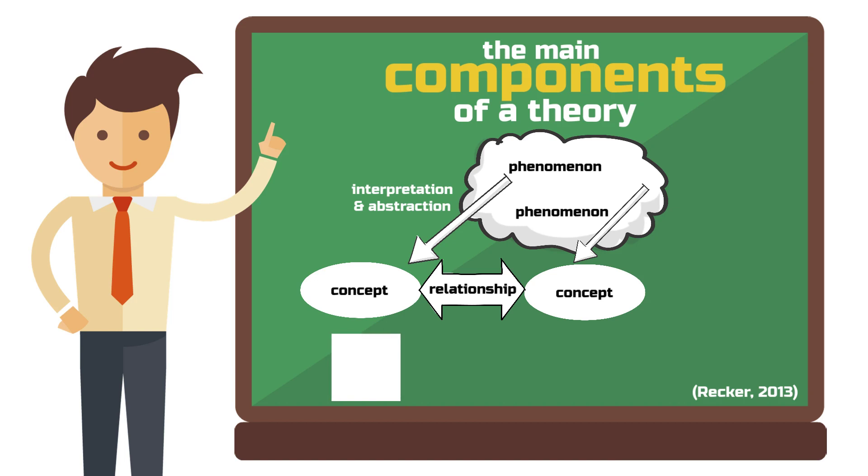To do this, concepts are transformed into constructs that consist of individual variables. This step is important so that we can determine what to observe and measure in a study. Measurability is achieved by operationalizing variables. The theoretical relationship between the variables is expressed in hypotheses that can be tested through statistical calculations. Here we are in the realm of quantitative research. For example, an experiment could be carried out to draw conclusions about the relationship between two or more variables.